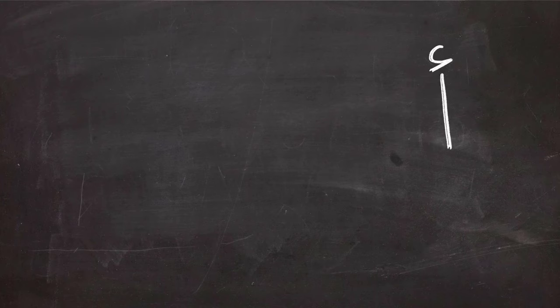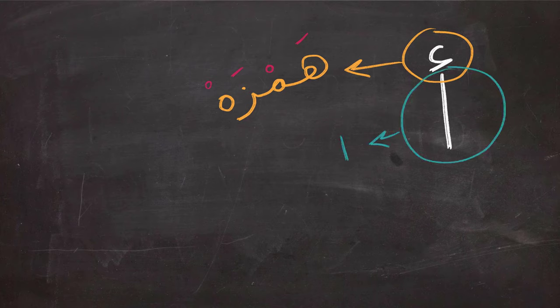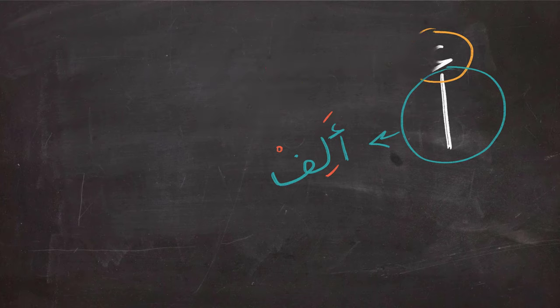Before we get started, alif is written as we see on the screen and it is made up of two parts. The sign on top is called Hamza, and then the rest of the sign is called alif. So basically alif is made up of Hamza and alif. We're going to talk about the lower part first and then we're going to talk about Hamza later in the video.